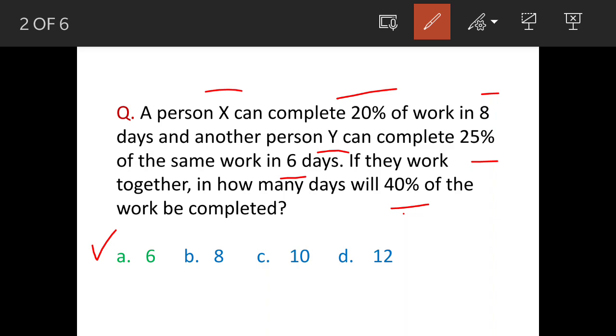But we'll mentally solve this question because in exams time is very short. So let's see, 20% work is being done by X and 25% of work is being done by Y, so total 45%. And if you take the average time, they are doing both in eight days and six days respectively, so 8 plus 6...